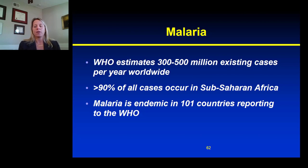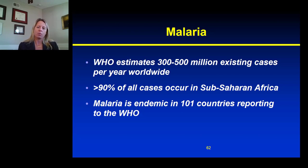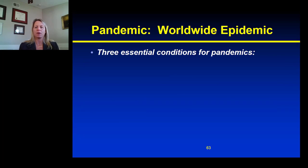However, if there were to be cases of malaria in the United States among non-travellers — that is, naturally, locally occurring malaria — then we would have an epidemic of malaria here, because it would be occurring at a level well above what we would normally expect.